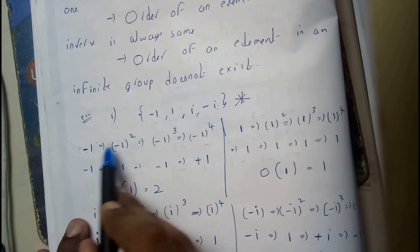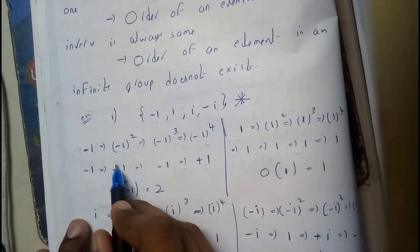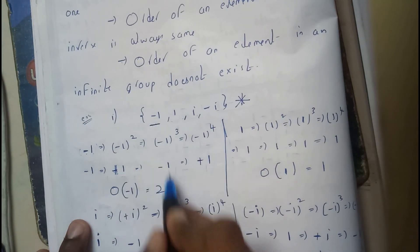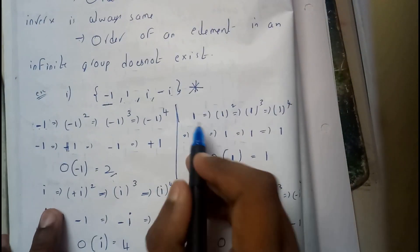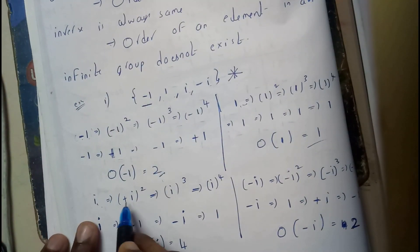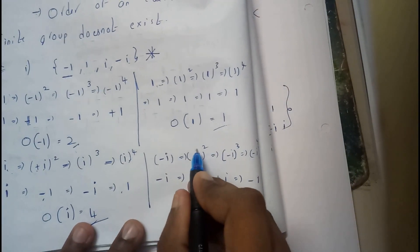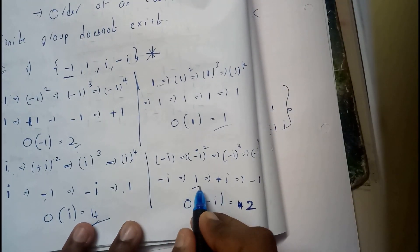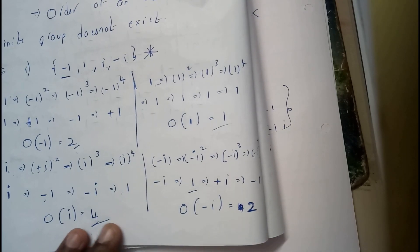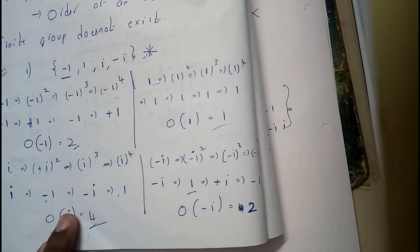For example: -1 raised to the power 2 equals 1, so the order is 2. For 1, it is 1 directly. For i, i^2 is -1, i^4 is 1, so order is 4. For -i, (-i)^2 is -1, so order is 2.